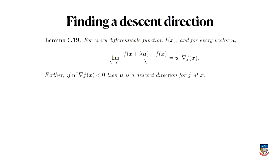There's a theorem that helps us do that. I won't prove it because it's quite similar to the theorem we proved in the last video about conditions for global minima — you can prove it using Taylor's theorem. The theorem says: for every differentiable function and every vector u, the limit of that object — which looks like a derivative with respect to lambda of my function — equals u^T · ∇f(x).